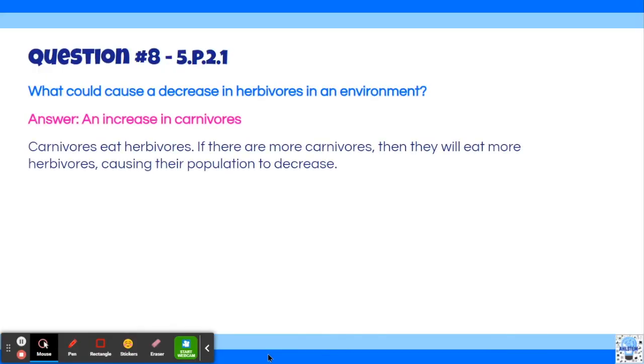The answer is an increase in carnivores. Carnivores eat herbivores. So if there are more carnivores, then they will eat more herbivores, causing their population to decrease.